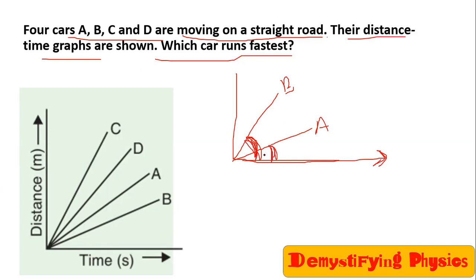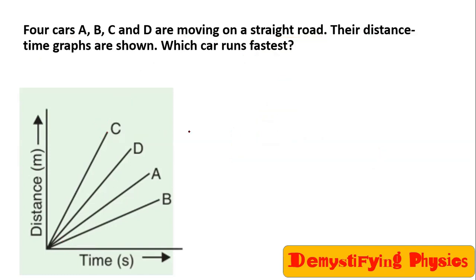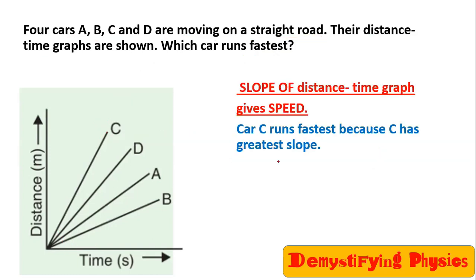You just have to compare the angles. B is making the least angle, so slope of B is least, then A, then D, and the maximum slope is of C. So the speed of C is maximum.